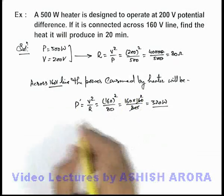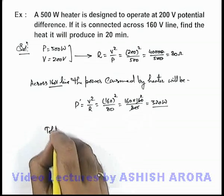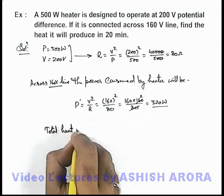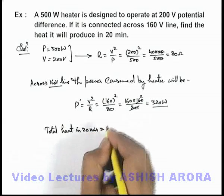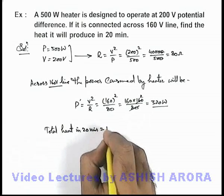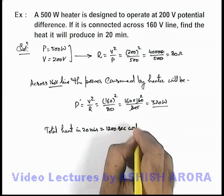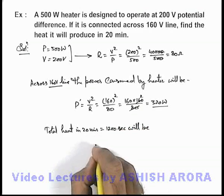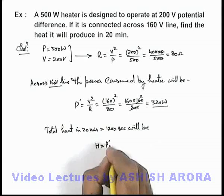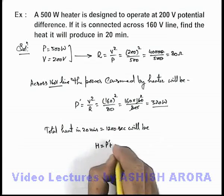So now in this situation, total heat in 20 minutes, which is equal to - you can convert it in seconds, that will be 1200 seconds - will be, this can be written as total heat, we can write as P prime multiplied by the time.